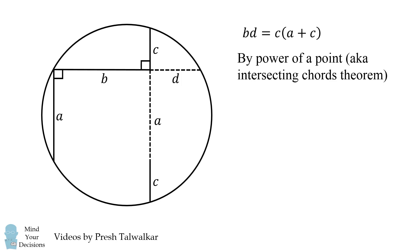We can now use this formula to solve for the unknown value of D. We divide both sides by B to get that D is equal to C times the quantity A plus C all over B.